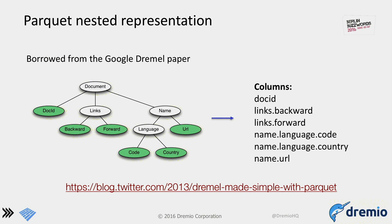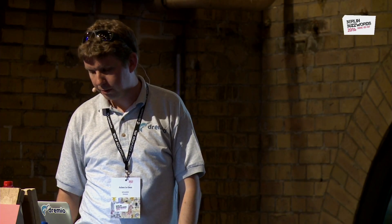This slide is about nesting, because my examples use simple flat schemas. But Parquet supports nested data structures, and this gives an idea of how nested structures are turned into a flat representation while capturing all nesting with repetition levels and definition levels. If you want more details, there's a link on the page with a blog post explaining exactly how that works.